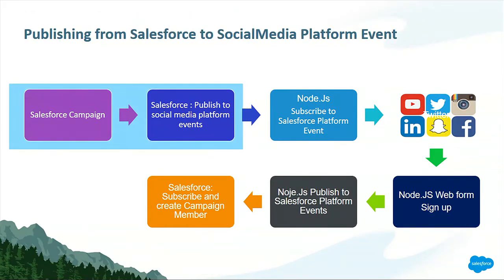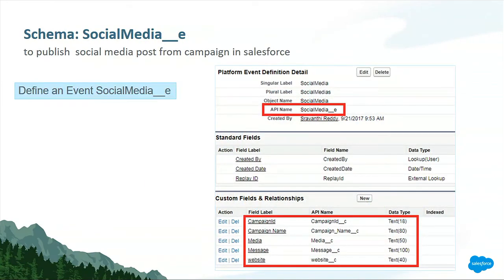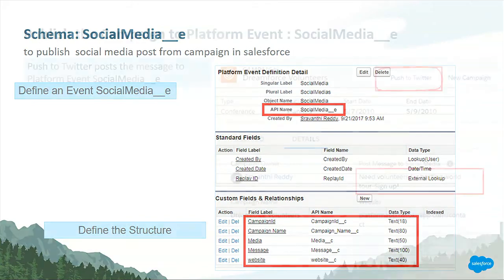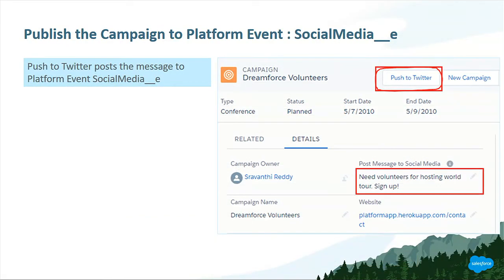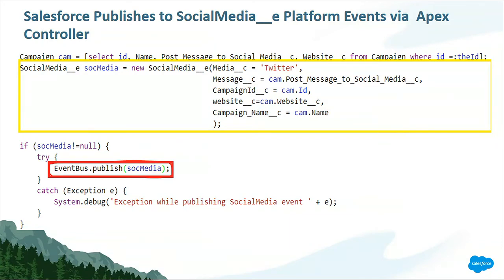Let's cover the process of having a Salesforce campaign pushed to this message bus. This involves setting up a message bus and creating a message to send. As noted earlier, we simply define an event. For my use case, I have created a Social_Media__E event with all the structure to get all the campaign information. This is the campaign in Salesforce — we would like to post this message requesting volunteers to sign up. Once the user pushes the button, the Apex code creates an instance of Social_Media__E and then publishes it to the event bus.